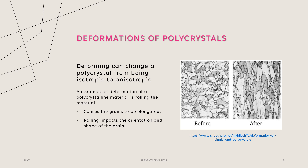Deformations of polycrystals can actually change a polycrystalline material from being isotropic to anisotropic — this relates to how polycrystals are anisotropic when the grains are textured. An example of deformation is rolling the material. In this image, before rolling, you can see a more regular, rounder look to the grains. After rolling, the grains become elongated, which introduces texture. The rolling impacts the orientation and shape of the grains, changing the material from isotropic to anisotropic — meaning properties vary based on the direction of measurement.